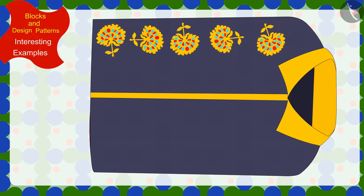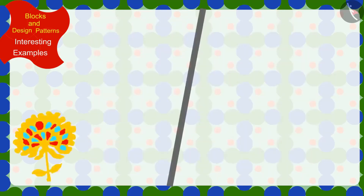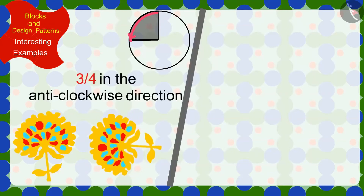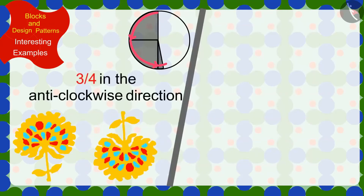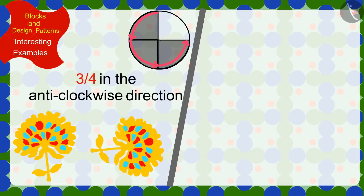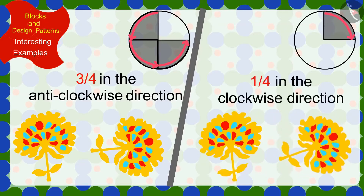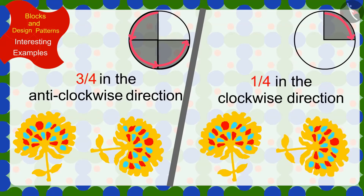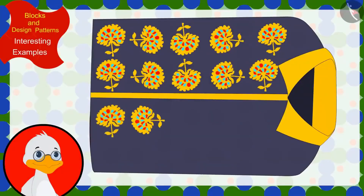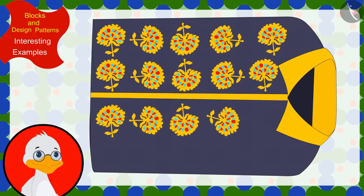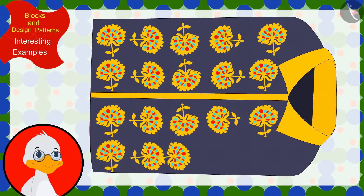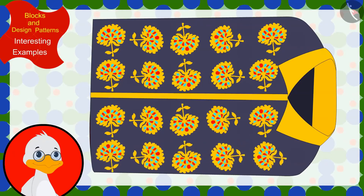You found the rule! To make this pattern, Kittu has rotated the previous impression three quarters in the anticlockwise direction — or one quarter in the clockwise direction — every time. Uncle too, like you, found the rule of this pattern and completed the design made on this shirt.